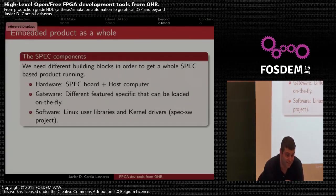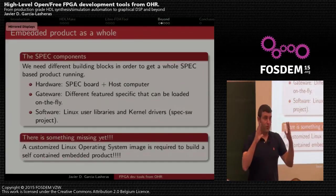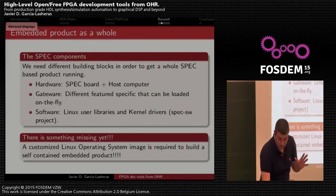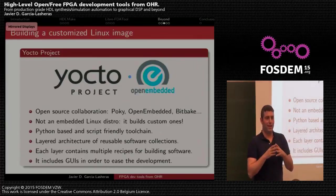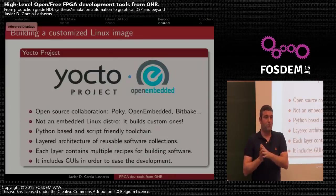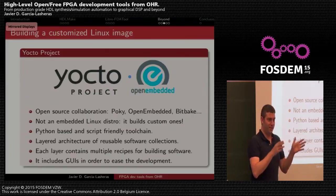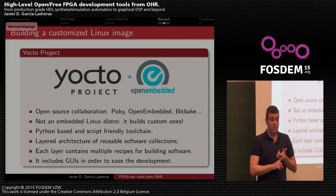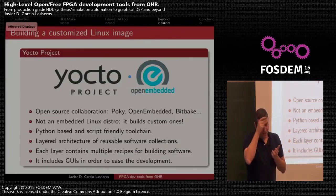There is still a piece that is missing: we need a customized Linux operating system image to run the whole product as a self-contained one. I've made experiments to build a customized Linux image and chose to use the Yocto Project. The Yocto Project is an open-source collaboration that includes the Poky distribution, the OpenEmbedded toolchain, and the BitBake compilation engine. It builds custom embedded distributions, is Python-based, and relies on a larger architecture of reusable software collections.